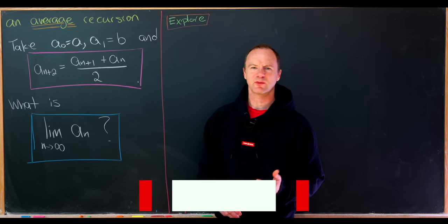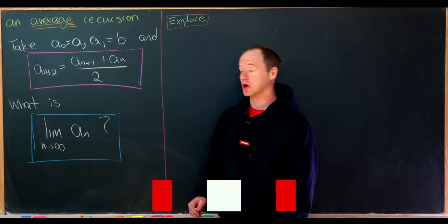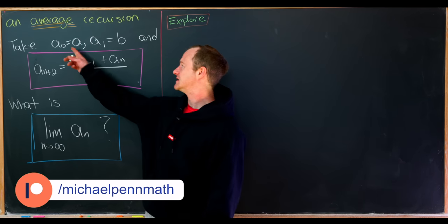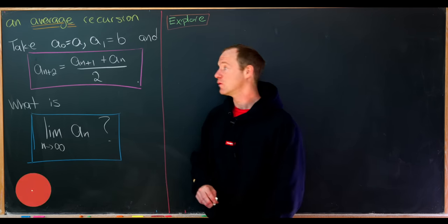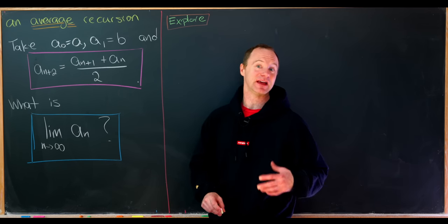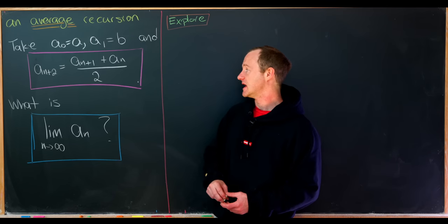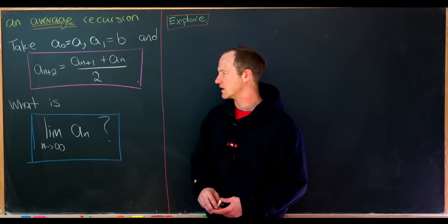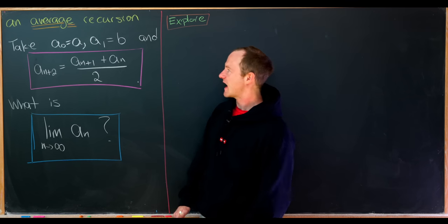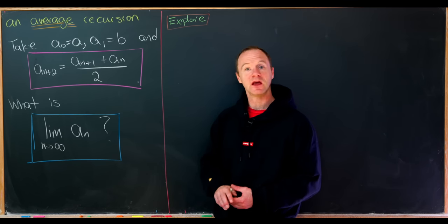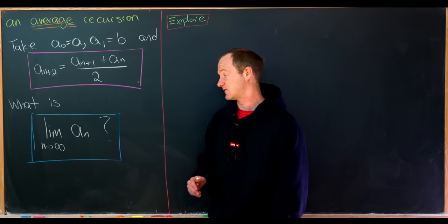Today we're going to look at a pretty interesting problem involving a recursively defined sequence — we'll call this the average recursion. We take seeds a0 = a and a1 = b, and define a(n+2) to be the average of the previous two terms: (a(n+1) + a(n)) / 2, for all n ≥ 0. Our goal is to determine if the limit of this sequence exists and, if it does, find its value.